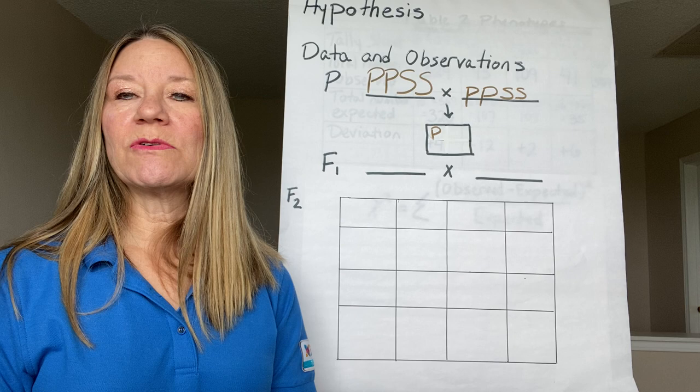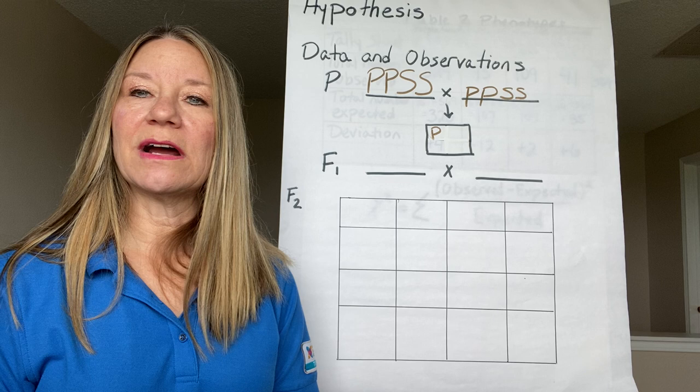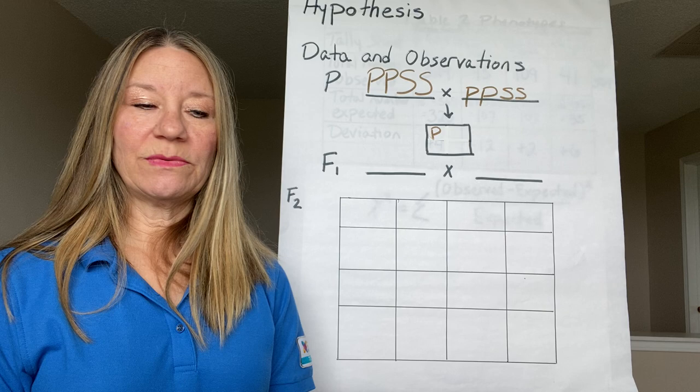We can follow the movement of those genes by using things like Punnett squares. I'm going to show you how to do a Punnett square and follow that with calculations to see whether or not our predictions for our results will be the same as what we have predicted.